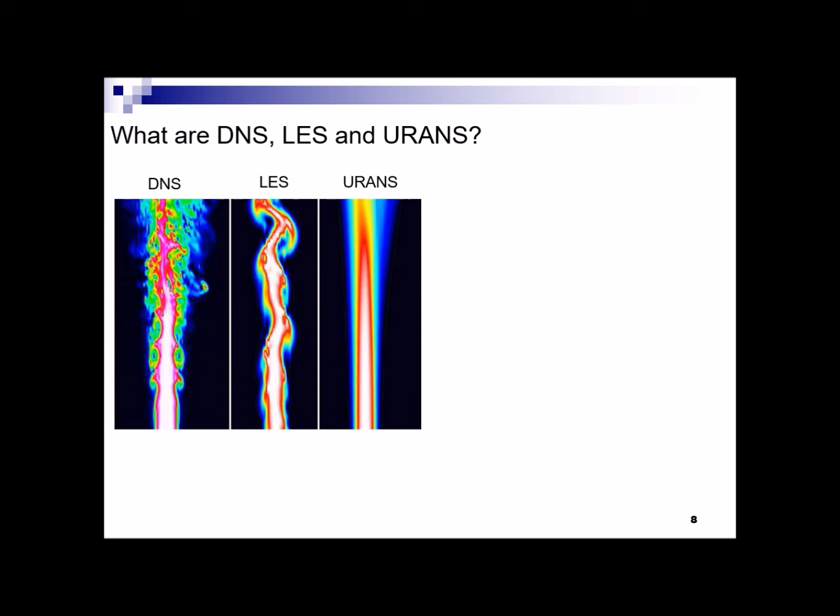At the end, URANS, which only captures the mean flow, the average flow, and it only models the turbulence effect through using statistical methods. It is in fact the most popular method to solve the turbulent flow problems nowadays because it is the less expensive one. URANS in fact uses a wide range of turbulence models which I will explain in the next videos.